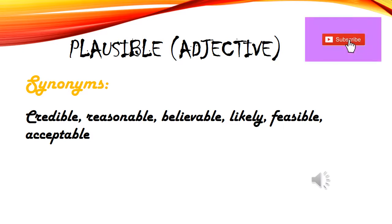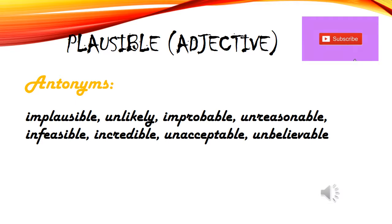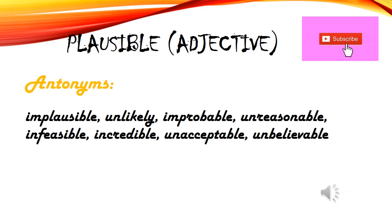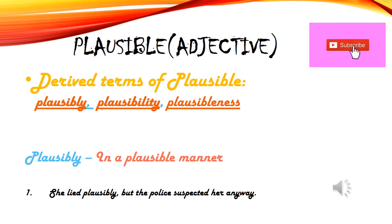Plausible ke synonyms hain: believable, acceptable, aur similar words jinka matlab hai 'vishwas karne laayak lage, sacha-sa lage.' Antonyms hain: implausible, unlikely, improbable, unreasonable, infeasible, incredible, unacceptable, unbelievable — ye sare cheez jo hume improbable ya unreasonable lagti hain, jis par trust nahi kar sakte, jo bilkul fake lage, wo implausible hain.